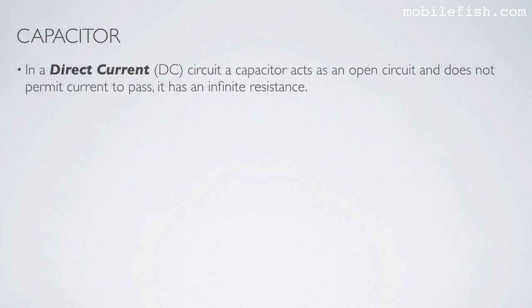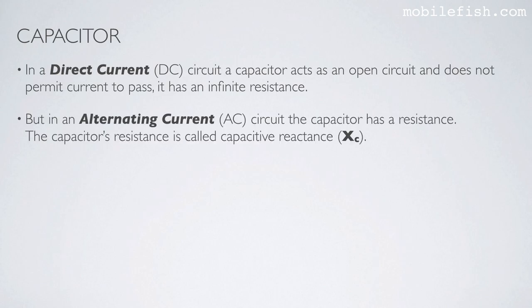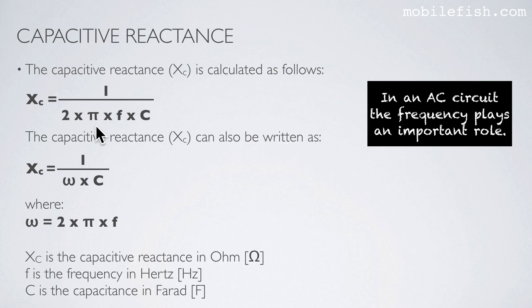In a direct current circuit a capacitor acts as an open circuit and does not permit current to pass — it has infinite resistance. But in an alternating current circuit the capacitor has a resistance called capacitive reactance. The capacitive reactance is calculated with the formula Xc = 1 / (2π f C), where omega equals 2 times pi times f, and f is the frequency. In an AC circuit the frequency plays an important role.